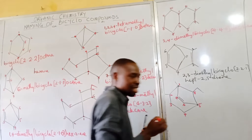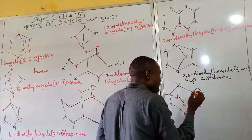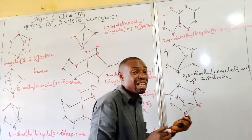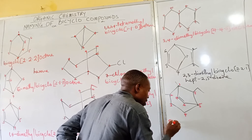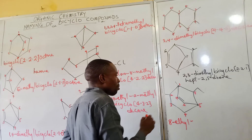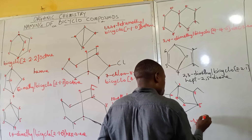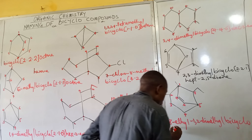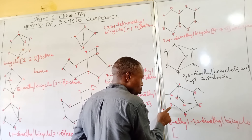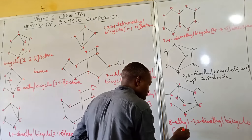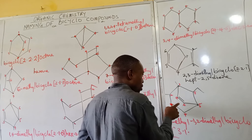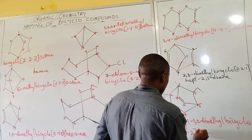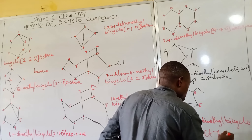Remember that the substituent is a methyl group — yes. So we name from the methyl in alphabetical order, giving position eight. Then the bicycle numbering follows: one, two, three excluding the bridgehead — three, then one, then two. It becomes bicyclo[3.2.1] and the parent name is octane, giving the complete name as 8-methylbicyclo[3.2.1]octane with the appropriate functional group positions.